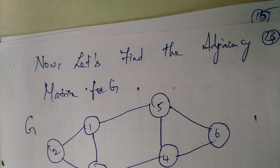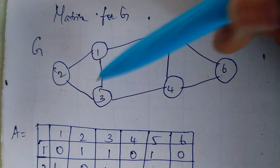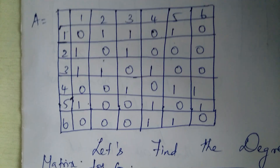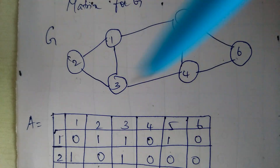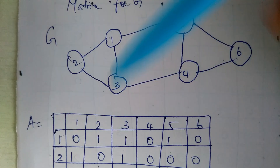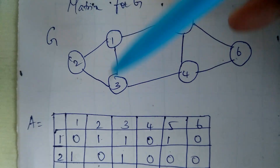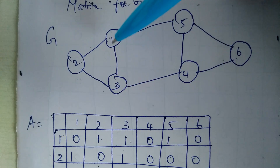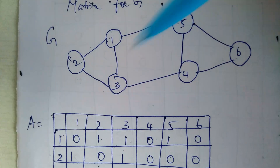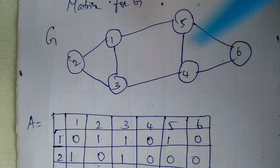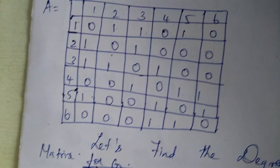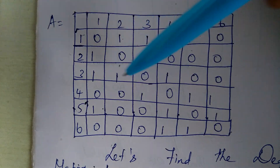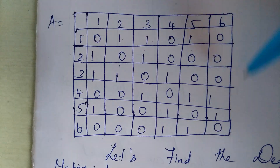Let's find the adjacency matrix for graph G. The diagonals are filled with 0. Node 1 and node 2 are connected, so the value is 1. Nodes 1 and 3 are connected, value is 1. Nodes 1 and 4 are not connected, value is 0. Nodes 1 and 5 are connected, value is 1. Nodes 1 and 6 are not connected, value is 0. This is how the adjacency matrix is formed, showing how each node connects to every other node.